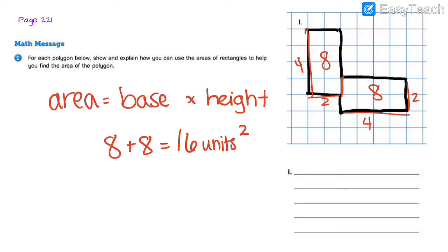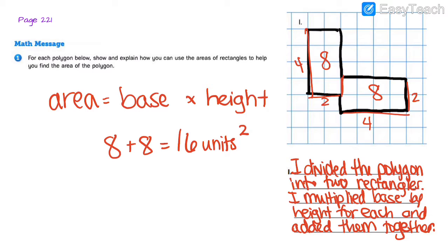Now it says to explain that. So let's go ahead and write some sentences about how we got there. First we divided up the polygons, then we found each area, then we added the areas together. Pause the video and write that down. I wrote that I divided the polygon into two rectangles, multiplied base by height for each, and added them together. You can write something similar to that.